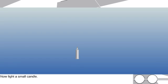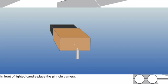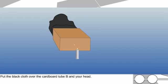Now light a small candle. In front of lighted candle, place the pinhole camera. Put the black cloth over the cardboard tube B and your head. Look through the cardboard tube.